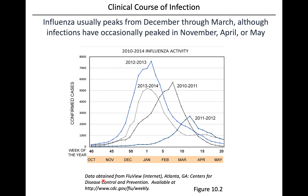Influenza peaks in the cold weather months, usually between December and March, though it varies year to year. We think this is partly because lower humidity and colder weather may promote those droplets or aerosolized particles to linger in the air longer and travel a little farther. Also, people spend more time indoors and in closer contact during those colder months.